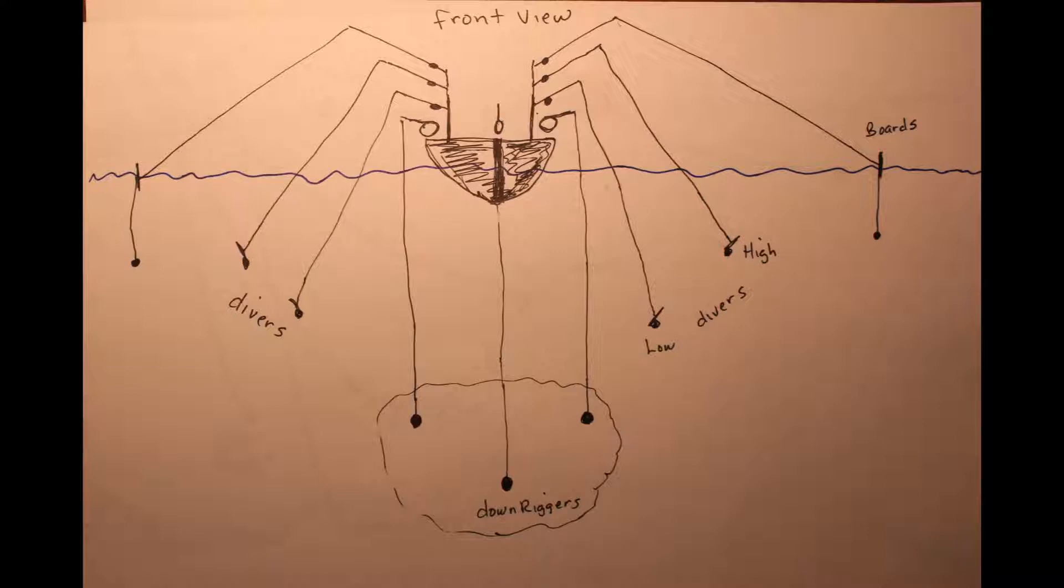So that got me thinking about where my lures were in a 3D model behind my boat, and then that led me to looking at what a 9 rod spread would be and that's what this picture is here. It shows you what most bigger boats run. I only run 3 rods, but most bigger boats run a spread that looks like this. And you could do it with a couple friends in a boat and I mean you could do this in a 16 foot boat easily.